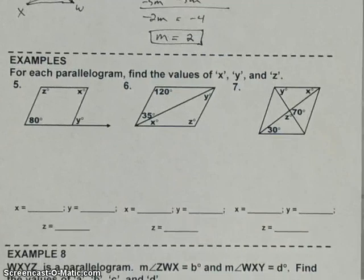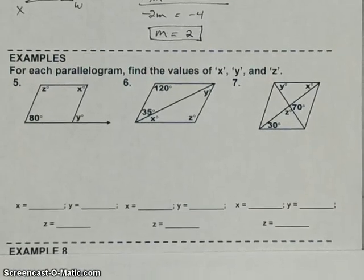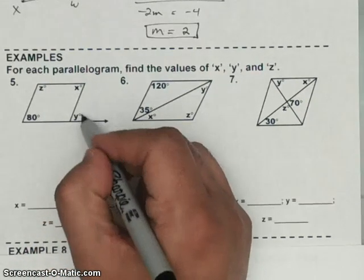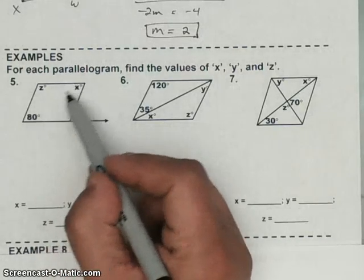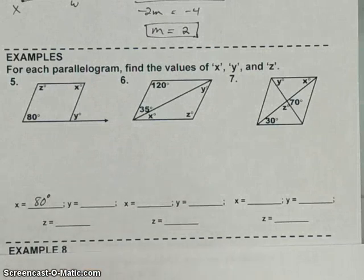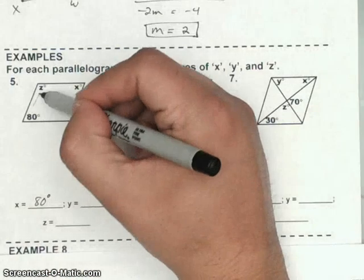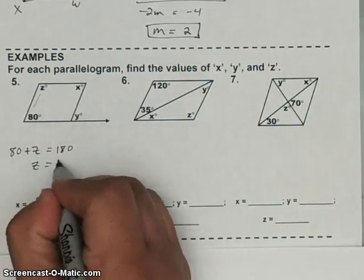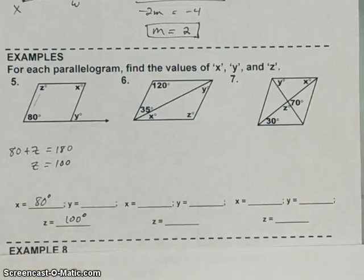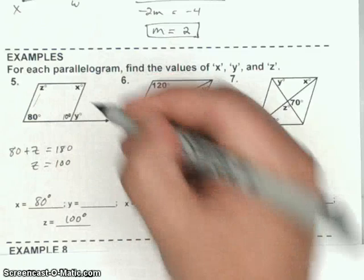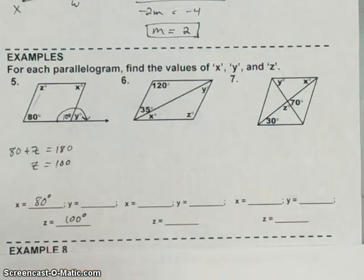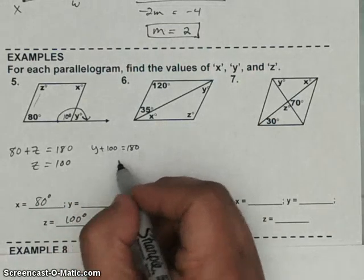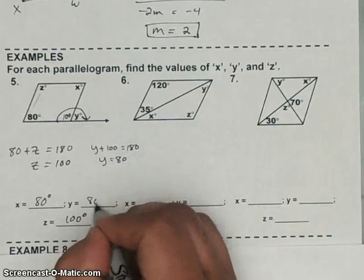In the next example, there's a parallelogram with an exterior angle. Opposite angles are congruent, so I know X is 80 degrees. These two consecutive angles have to be supplementary, so 80 plus Z equals 180, which means Z equals 100. Since Z is 100, this interior angle is also 100, and because Y and that angle form a linear pair, Y plus 100 equals 180, so Y equals 80 degrees.